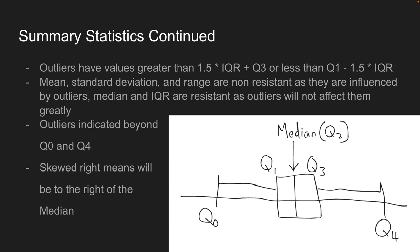Here is a box plot. You label the median, Q1, and Q3, then also label the minimum and maximum values within the outlier boundaries. Any values outside those ranges are marked as outliers. Note that if a graph is skewed to the right, the mean will be to the right of the median. If skewed to the left, the mean will be to the left of the median. If not skewed at all, the mean will be approximately equal to the median.